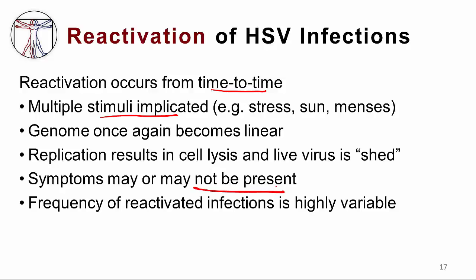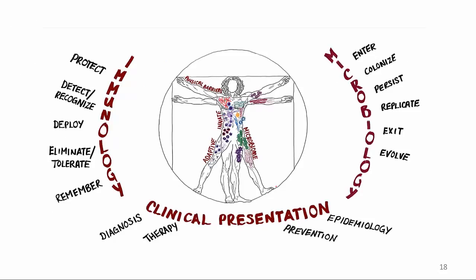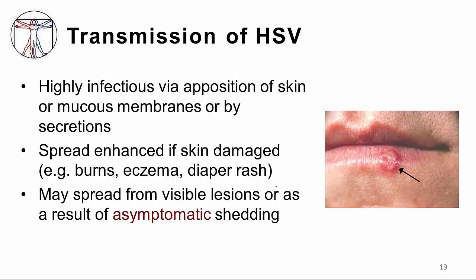The frequency of reactivation varies markedly from individual to individual. After the virus has become replicating, it may move to another host by apposition of skin or mucous membranes. That spread from host to host is enhanced if there is skin damage in the susceptible individual — for example, if the person has burns, a skin rash called eczema, or a diaper rash. The virus being shed, even from a person without symptoms, may enter that damaged area, begin replicating, and the infection begins in a new host.